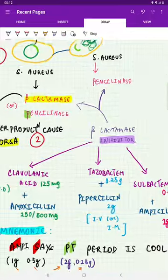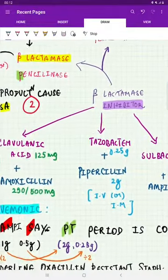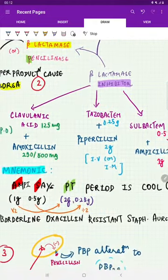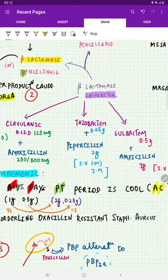And next, how to tackle this? We are going to give beta-lactamase inhibitors. They are basically Clavulanic acid, Tazobactam, and Sulbactam. So remember it very easily. Remember a mnemonic: someone called Ampi.